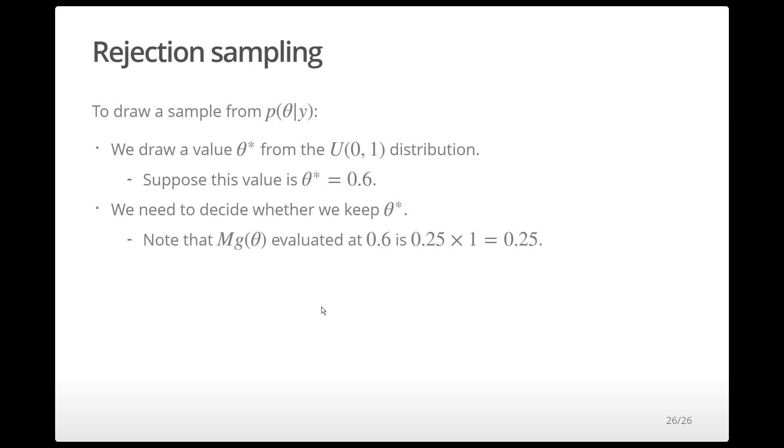Note that if we evaluate the bounding function g times m at 0.6, we get 0.25. If we evaluate the target density at 0.6, we get 0.24.